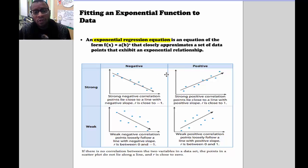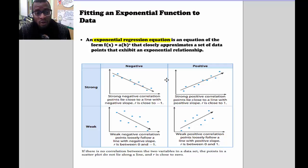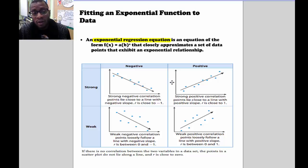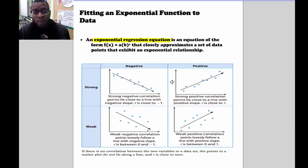An exponential regression equation is an equation of the form f(x) = a times b raised to the x power, which is our standard formula for an exponential function. It closely approximates a set of data points that exhibit exponential behavior or an exponential relationship.